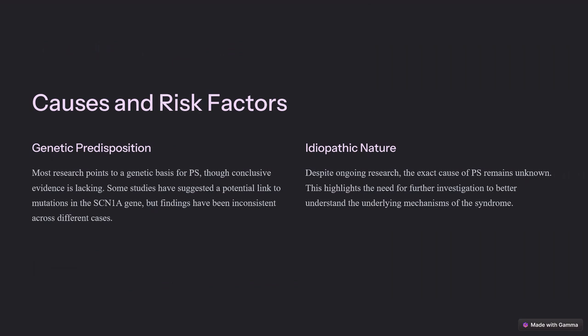Many studies have tried to understand the causes of P.S. since its discovery, though not much has been conclusive. Most research points to a genetic predisposition to idiopathic syndrome. In research conducted by Livingston and others, it was suspected that one family who had P.S. had a mutation in the SCN1A gene, with a severe case and a strong association of fever as a precipitating factor. However, other cases show that no SCN1A mutation was found in two sisters who had typical features of P.S., who also reported infrequent autonomic seizures and no febrile precipitance.